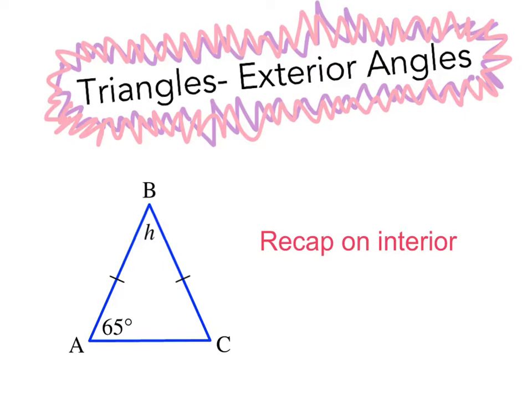Last lesson we looked at triangles, different types of triangles, and started to form the basis. Our basic understanding that all interior angles of a triangle equal 180 degrees. So this angle here plus this angle here plus this angle here equal 180 degrees. We also had a look at identifying different features of different types of triangles in order to work out unknowns.